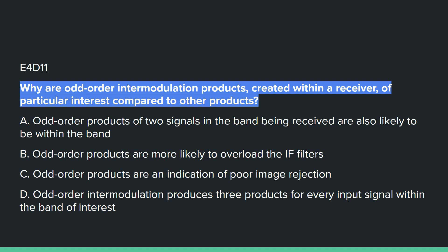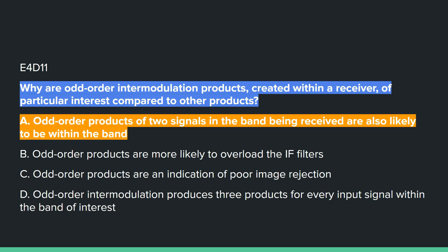E4D11: Why are odd-order intermodulation products created within a receiver of particular interest compared to other products? Answer A: odd-order products of two signals in the band being received are also likely to be within the band.